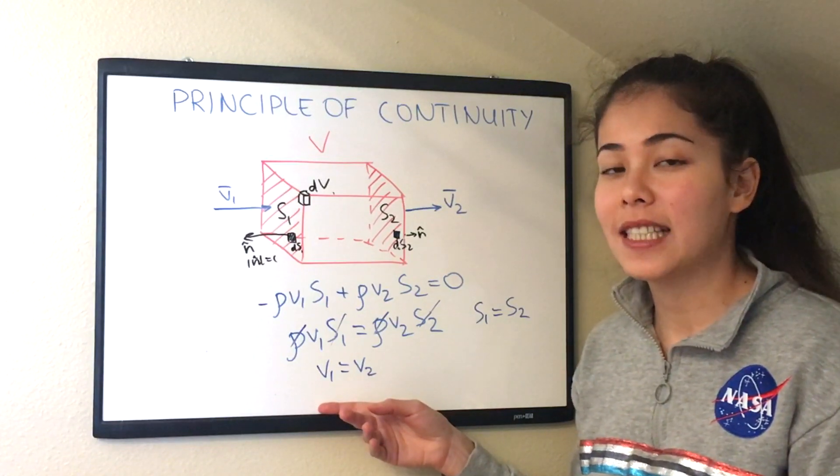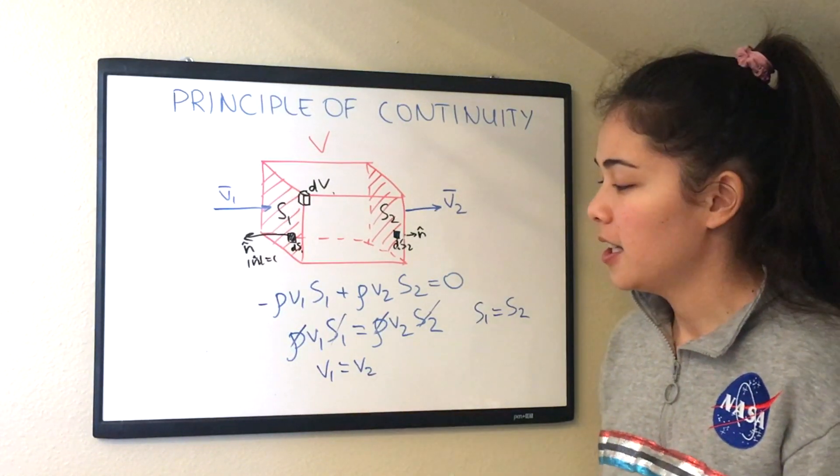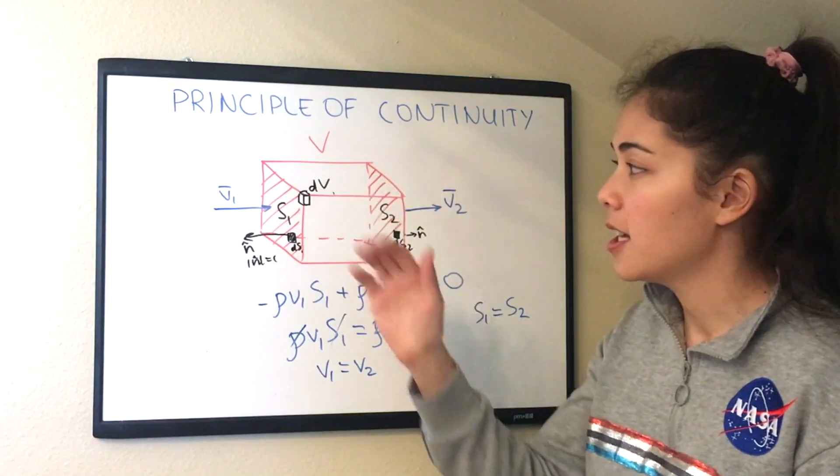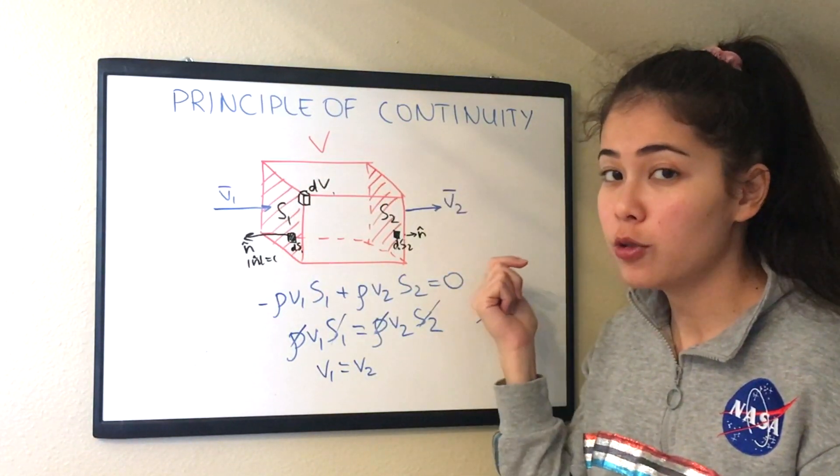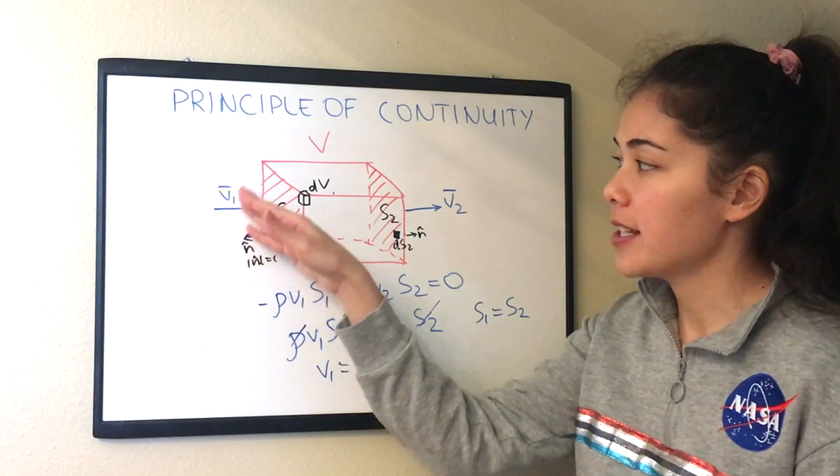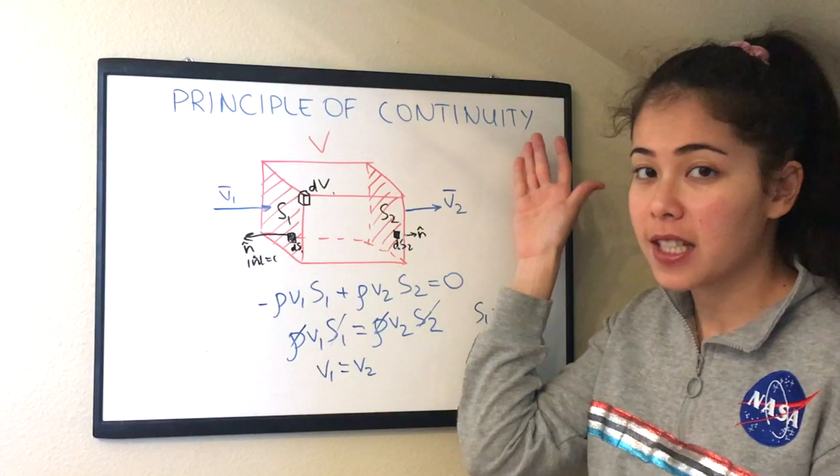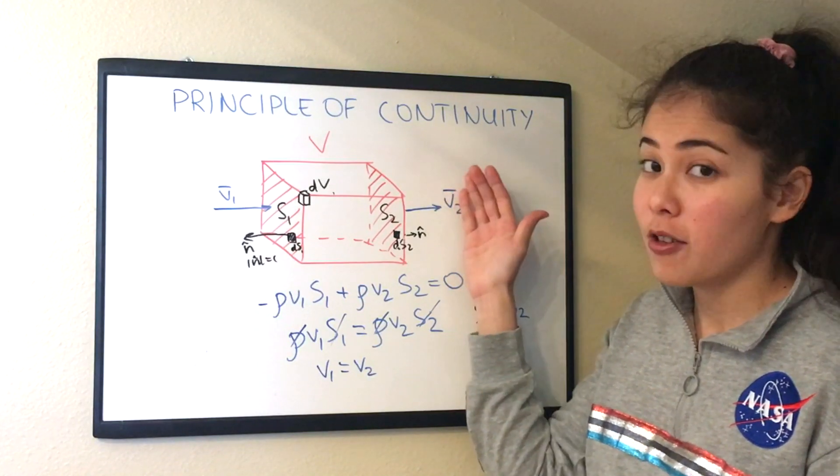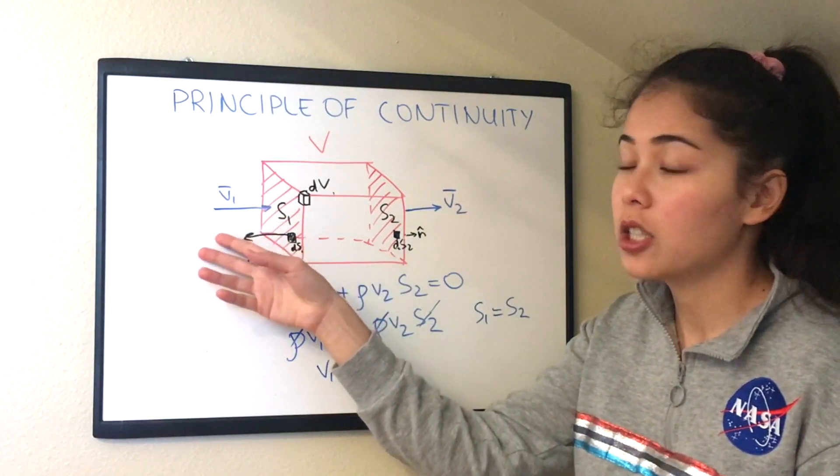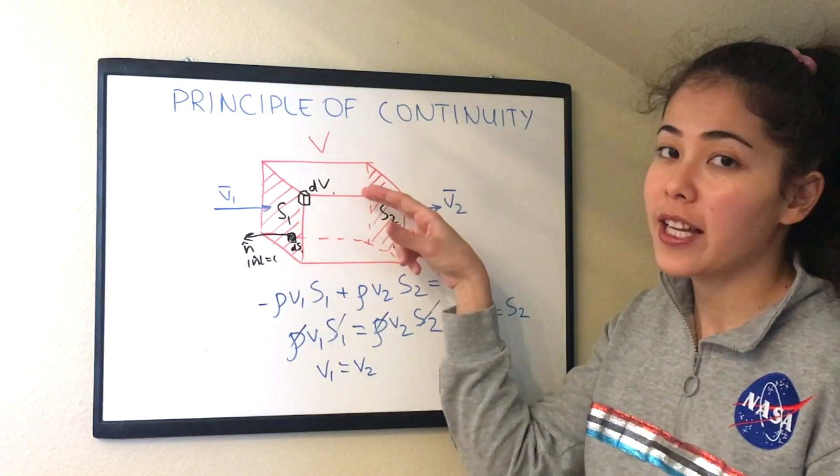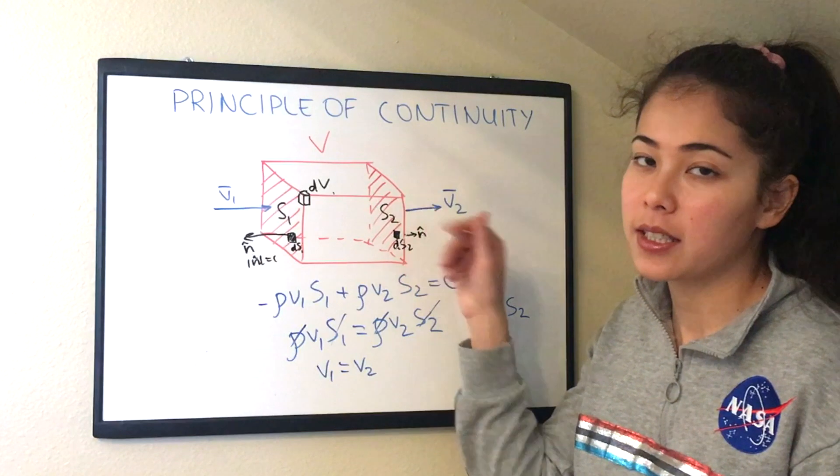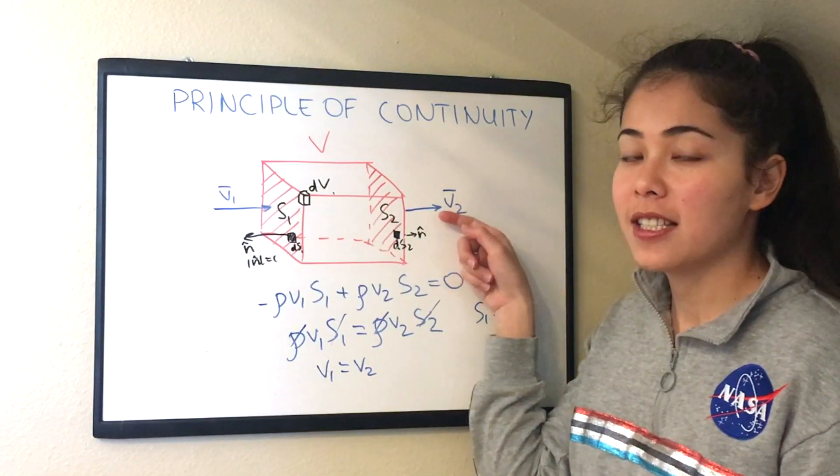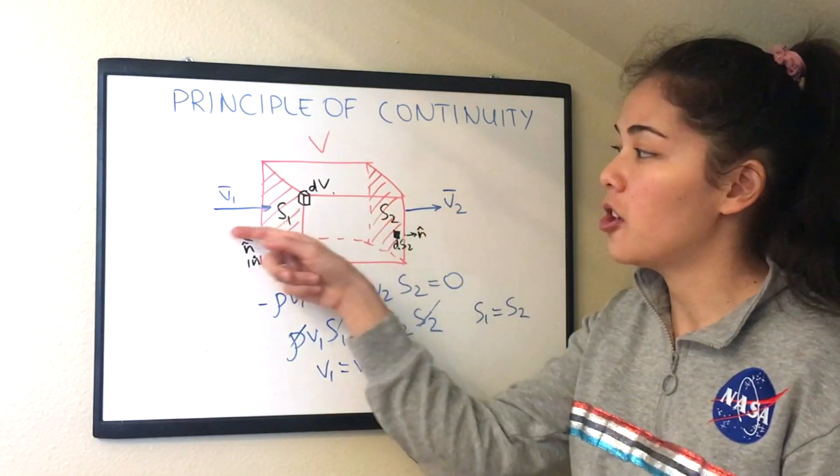And this is the physical significance of the principle of continuity. Because if you think of this problem physically, this just means we have a box. We have two surfaces that are equal to each other and we have air entering through one side. So then the principle of continuity will tell us that the velocity of air at the exit of the box will equal to the velocity of air at the entrance of the box. Because air cannot accumulate inside the box because we have another opening on the other side.